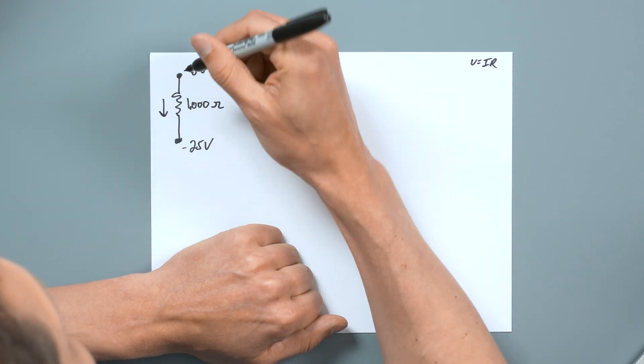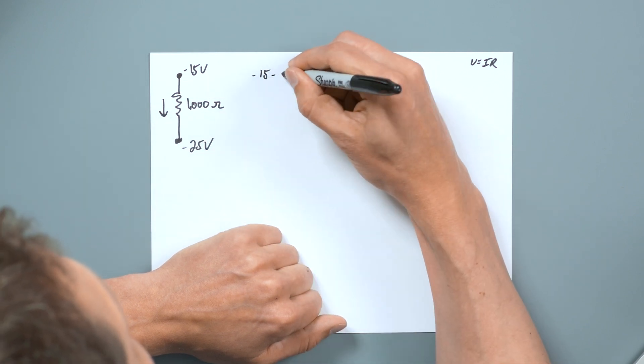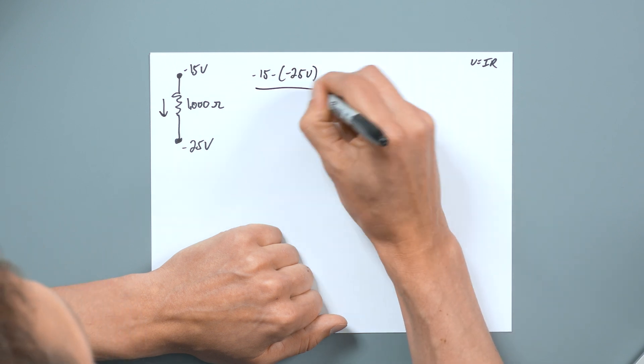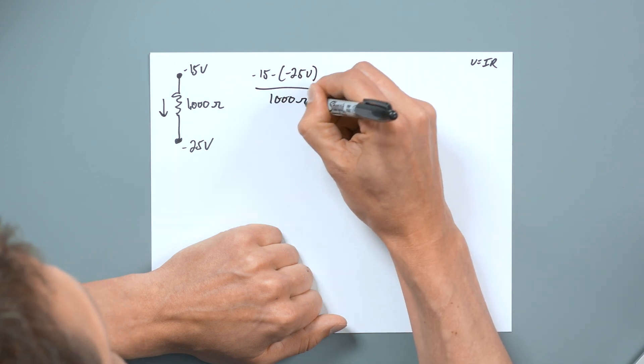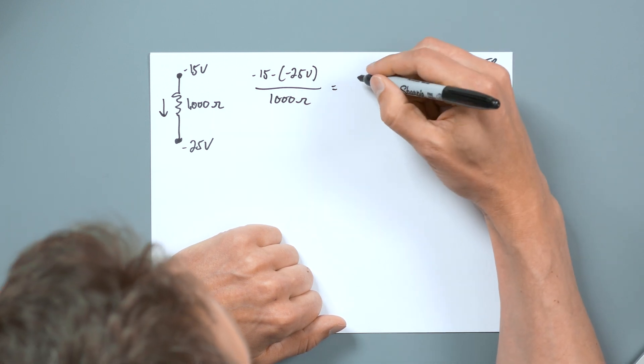So I've got negative 15 volts and then got a minus that one, but that's minus negative 25 volts. And then over 1000 ohms. Well, negative 15 minus negative 25 is a positive 10. So that actually becomes a positive number.